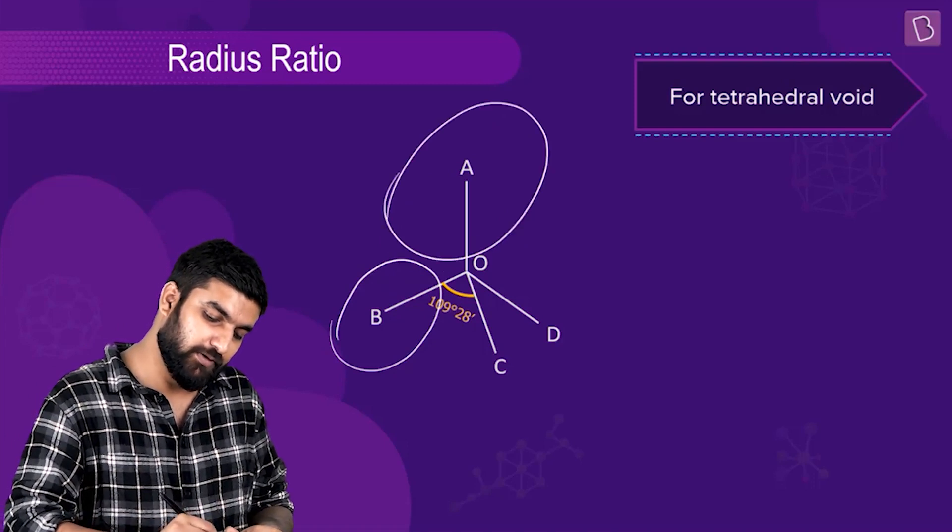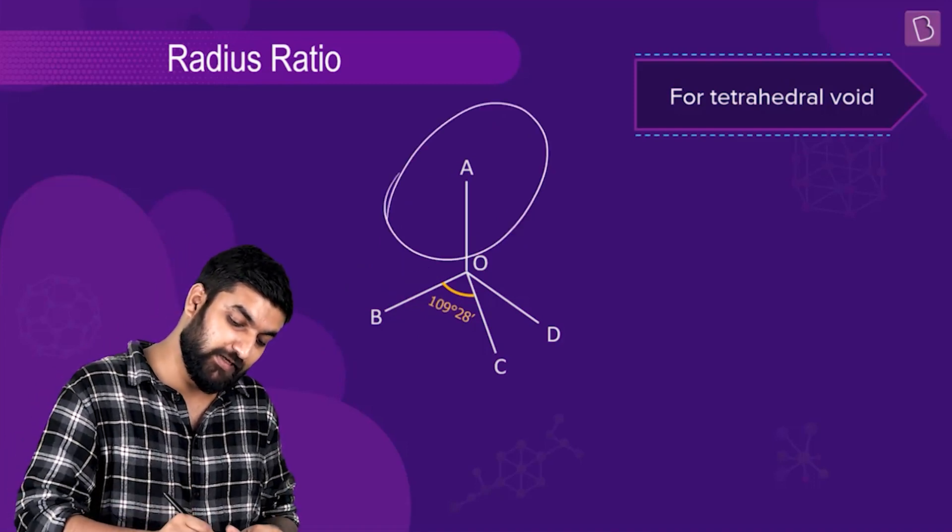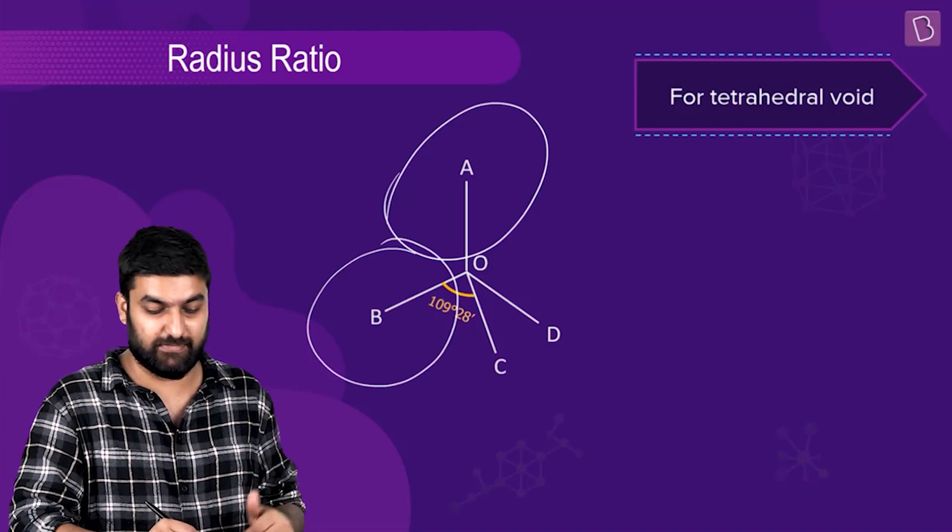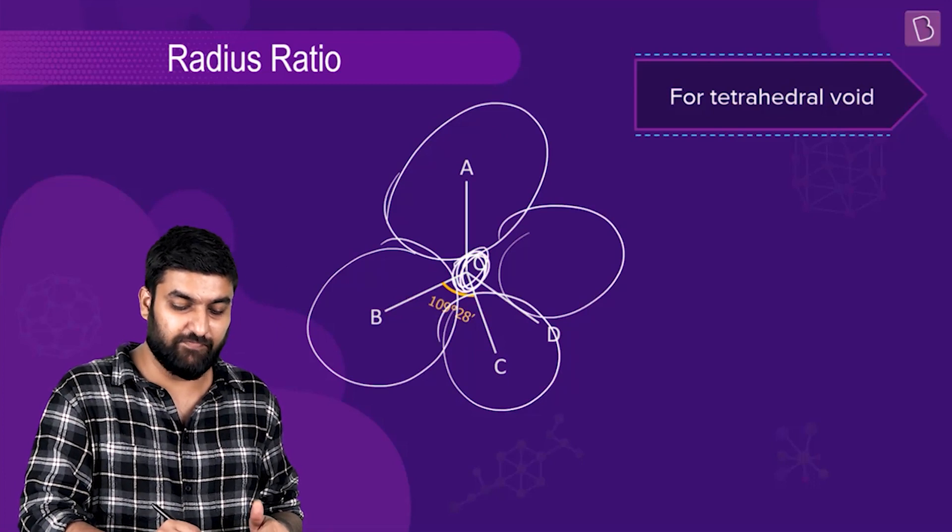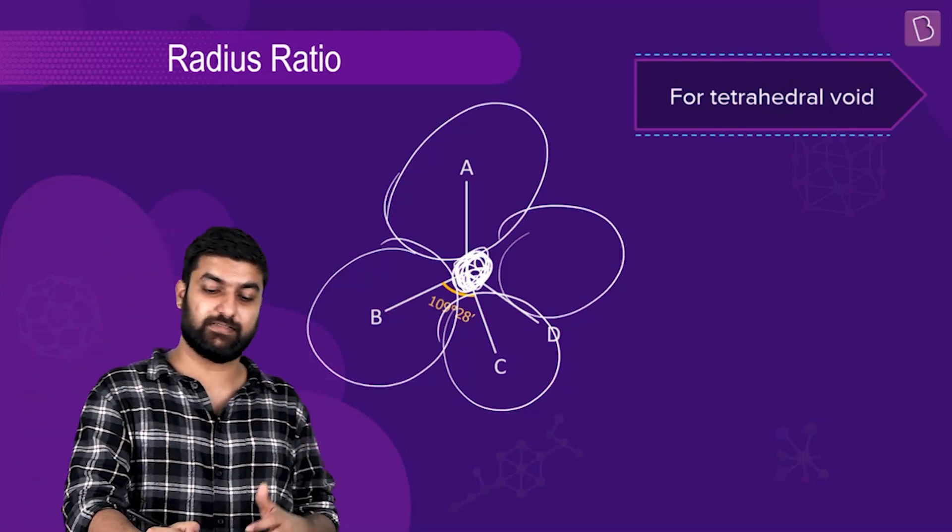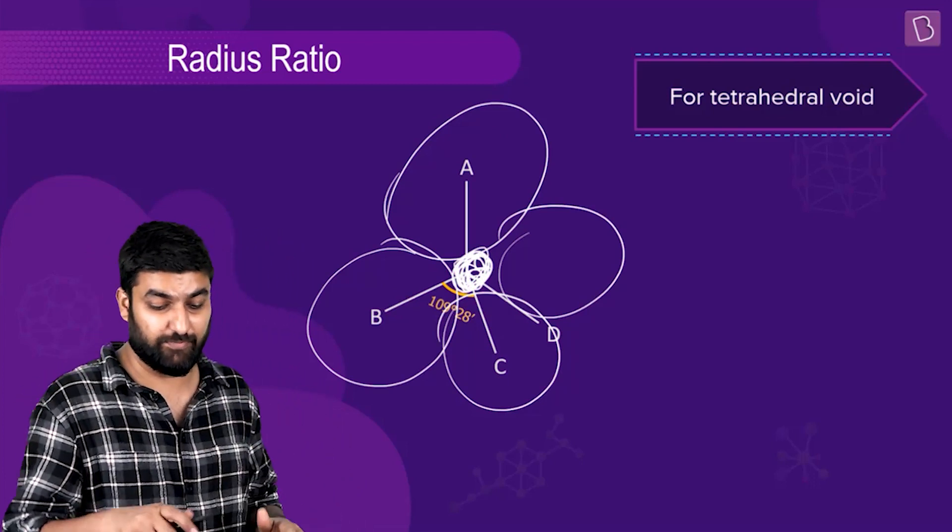We have another sphere here, another one here, and at the center somewhere you have a void. That's what I'm trying to tell you. Now the point is, this distance turns out to be equal to r plus R.